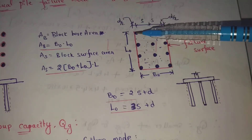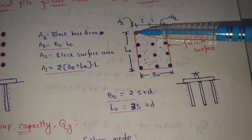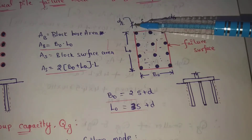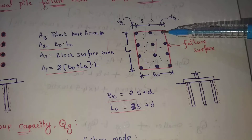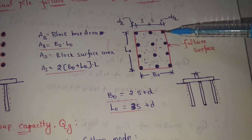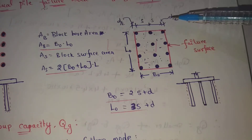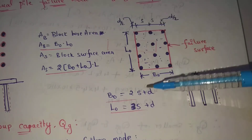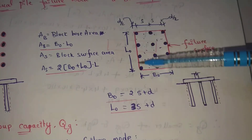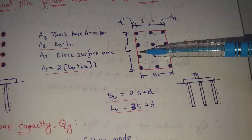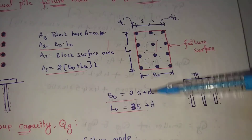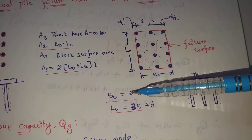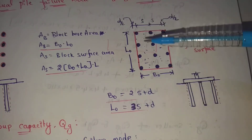The corner has a distance of d by 2 on each side. For the length direction: there are 3 spacings, so 3s, plus d by 2 on each side. Therefore, L0 is equal to 3s plus d.